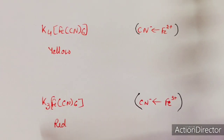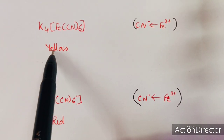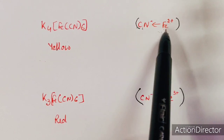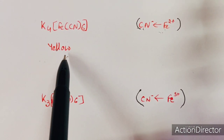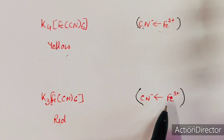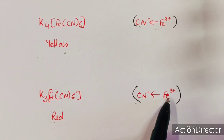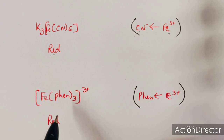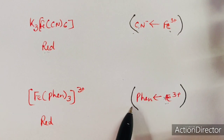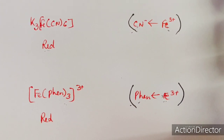Examples of compounds showing MLCT transitions include potassium ferrocyanide, which is yellow in color. The color arises due to transfer of electrons from iron to the cyanide ligand, which is a pi-acceptor ligand, showing MLCT type electronic transition. Similarly, for potassium ferricyanide, the electronic transition takes place from Fe³⁺ to CN⁻. And in the phenanthroline compound, the transition occurs from Fe³⁺ to phenanthroline, also a pi-acceptor ligand.